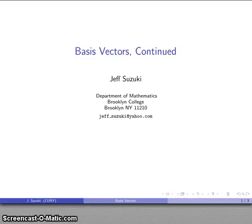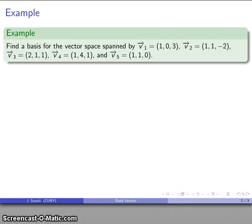All right, so let's try to find another set of basis vectors and see if we can try to generalize our process. So again, we'll take a vector space spanned by the vectors v1, v2, v3, v4, and v5.